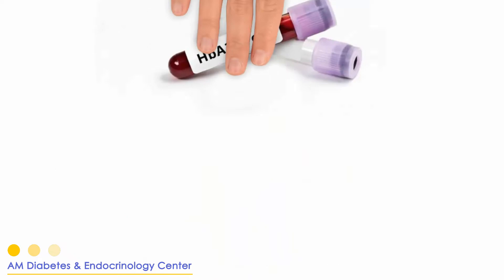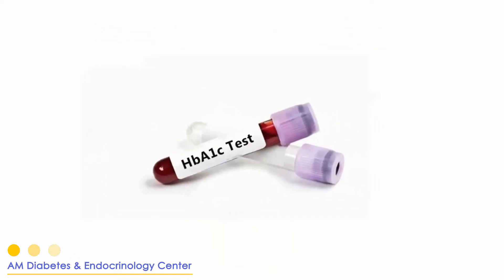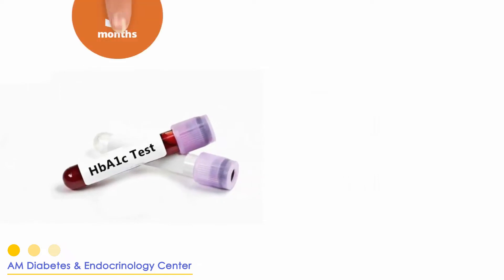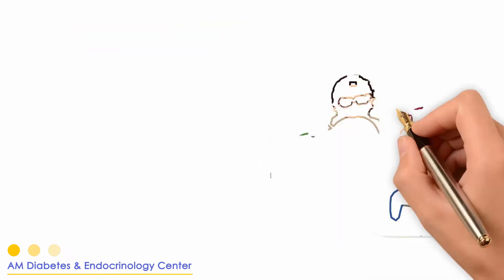3. Hemoglobin A1c. The hemoglobin A1c value represents an average blood glucose value over the last three months.